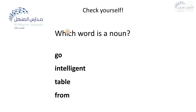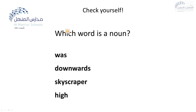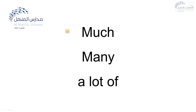Which word is a noun? We have go, intelligent, table and from. The table is a noun. Which word is a noun? Began, beautiful, between, book — book is a noun. Which word is a noun? Was, downwards, skyscraper and high — skyscraper. Now we are going to turn to another point of the lesson to do with much, many and a lot of.